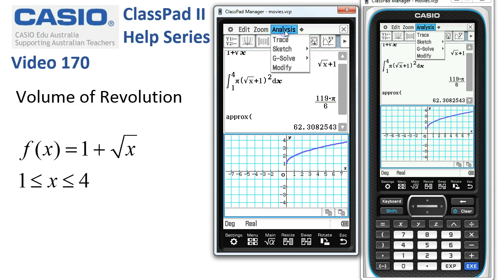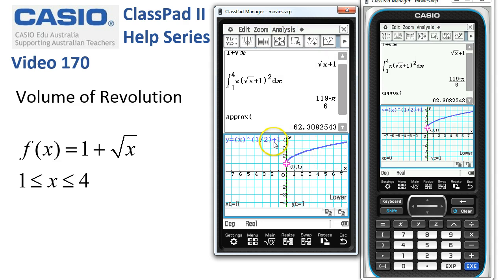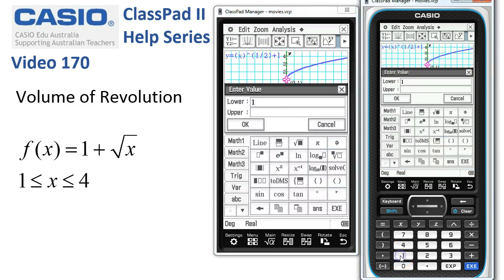So here we go. Up to the analysis menu, G-Solve. And the very bottom item here is volume of revolution. So Classpad is asking us for the lower band at the moment. So the quickest way is simply to say 1. And then up comes this entry box where we can put the lower is 1, the upper is 4, and tap OK.